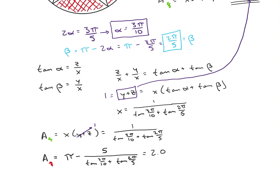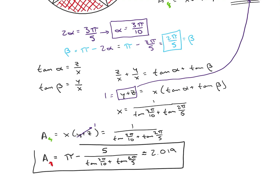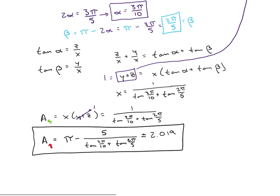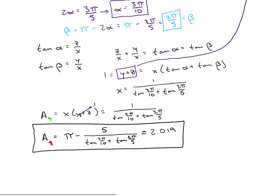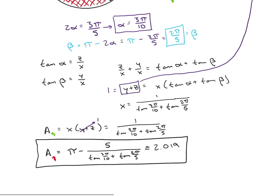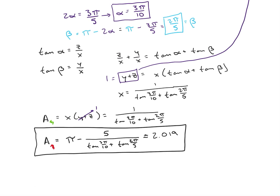This will end up being about 2.019 — that's going to be our area. So the total area is π minus 5 over (tan(3π/10) plus tan(2π/5)). Thank you very much for working through this problem with me today. I hope you enjoyed it. If you did, please like and subscribe. If you have your own problem you'd like me to do, feel free to submit it and I'll work through it on my channel. And as you're working through problems yourself and you start to get stuck — think once, think twice, and when you really need to, think thrice. Thanks.